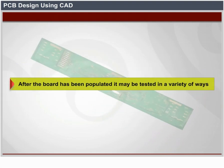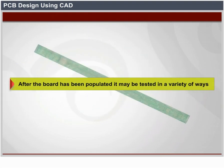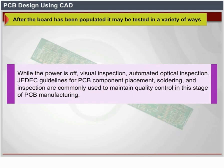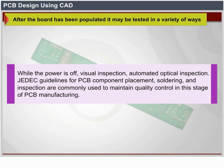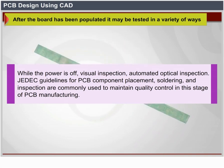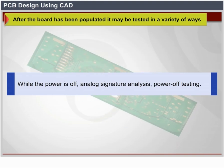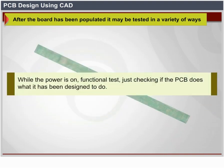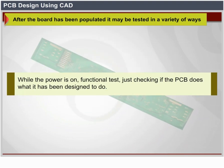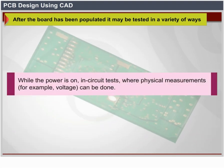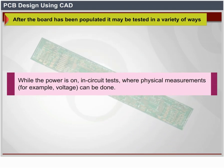After the board has been populated, it may be tested in a variety of ways. While power is off: visual inspection, automated optical inspection (AOI); JEDEC guidelines for PCB component placement, soldering, and inspection are commonly used for quality control. Also while power is off: analog signature analysis (power-off testing). While power is on: in-circuit test where physical measurements such as voltage can be done. Also while power is on: functional test — checking if the PCB does what it was designed to do.